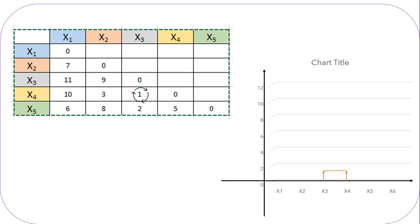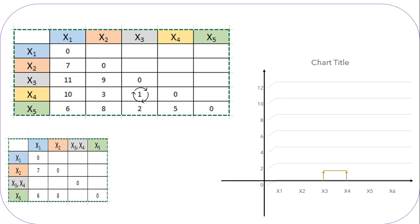Let's draw our dendrogram for the same. Again we have to find out the minimum distance among the matrix values, but before that we have to create a new matrix table which includes the cluster of x3 and x4. We'll keep the values for data points x1, x2, and x5 as they are. The question is how can we decide the distance from cluster x3-x4 to x1, to x2, or to x5. We will find the distance from x3 to x1 and from x4 to x1, then check which is the minimum and consider that as the distance from cluster x3-x4 to data point x1.